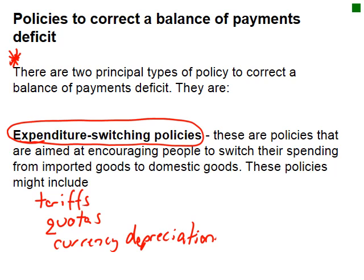Policies to correct a balance of payments deficit — there are two principal types you need to know for the IB. The first is expenditure switching policies: you try to encourage people to switch their spending from imported goods to domestic goods. These might include tariffs, quotas, and currency depreciation — making it more attractive to buy locally produced goods than foreign-made goods.